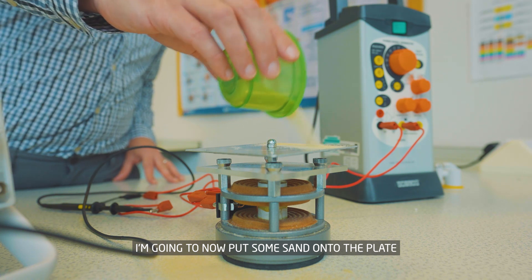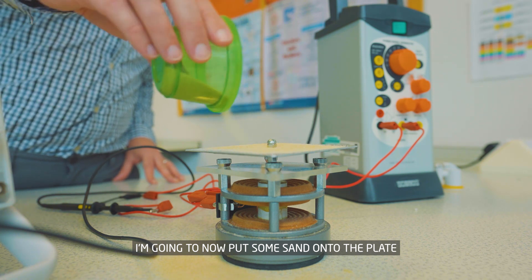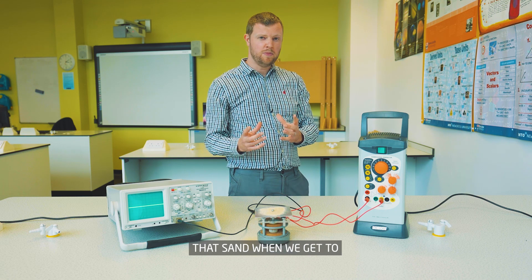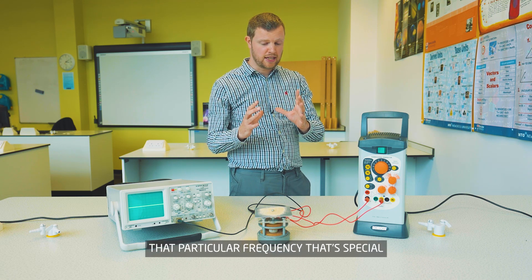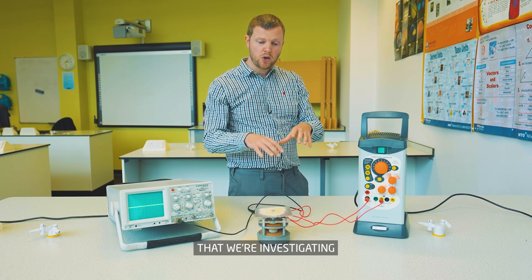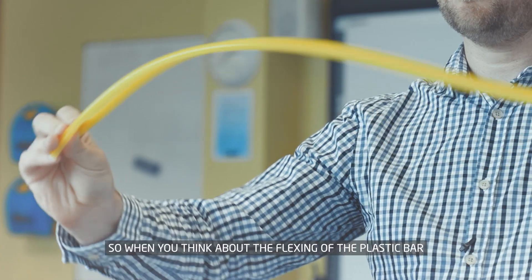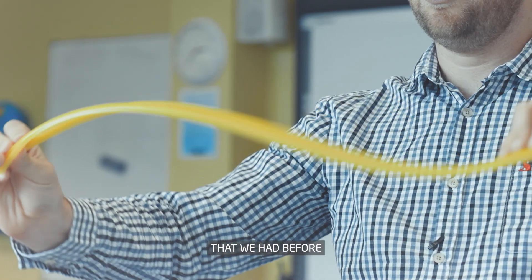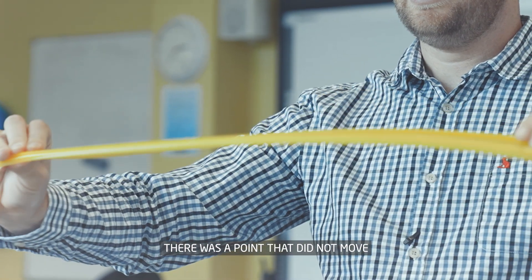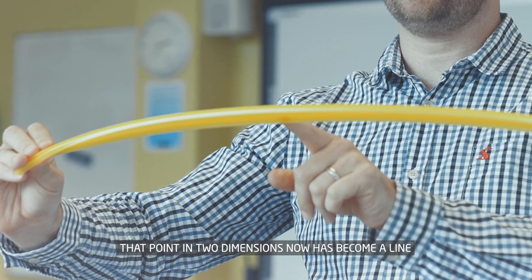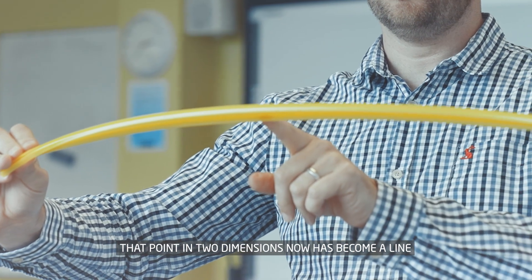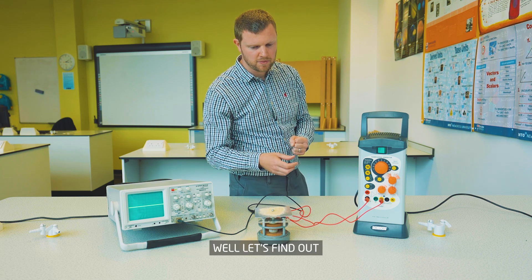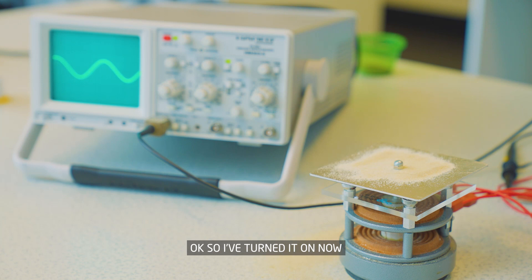I'm going to put some sand onto the plate, and once I turn it on, that sand, when we get to that particular frequency that's special that we're investigating, will form into a particular shape. When you think about the flexing of the plastic bar, there was a point that did not move. That point in two dimensions now has become a line. Can you think what shape that might be? Well, let's find out.